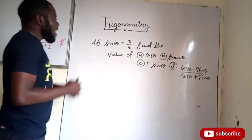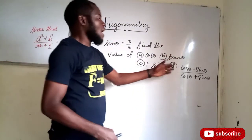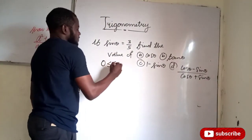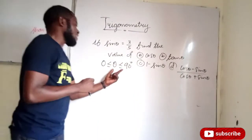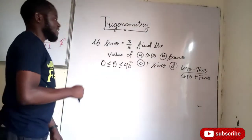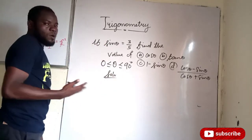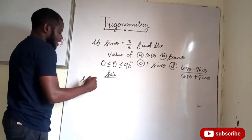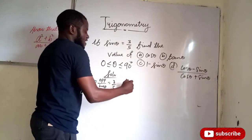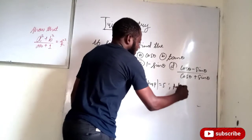We are told that sine of theta equals 3 over 5. Find the value of cos theta, tan theta, 1 minus sine theta, and cos theta minus sine theta divided by cos theta plus sine theta, if theta lies between 0 and 90 degrees — this tells us theta is an angle in a right angle triangle. Now, recall the definition of sine: sine of an angle is opposite over hypotenuse. So this equals 3 over 5, hence the opposite is 3 and the hypotenuse is 5. The missing side is the adjacent.